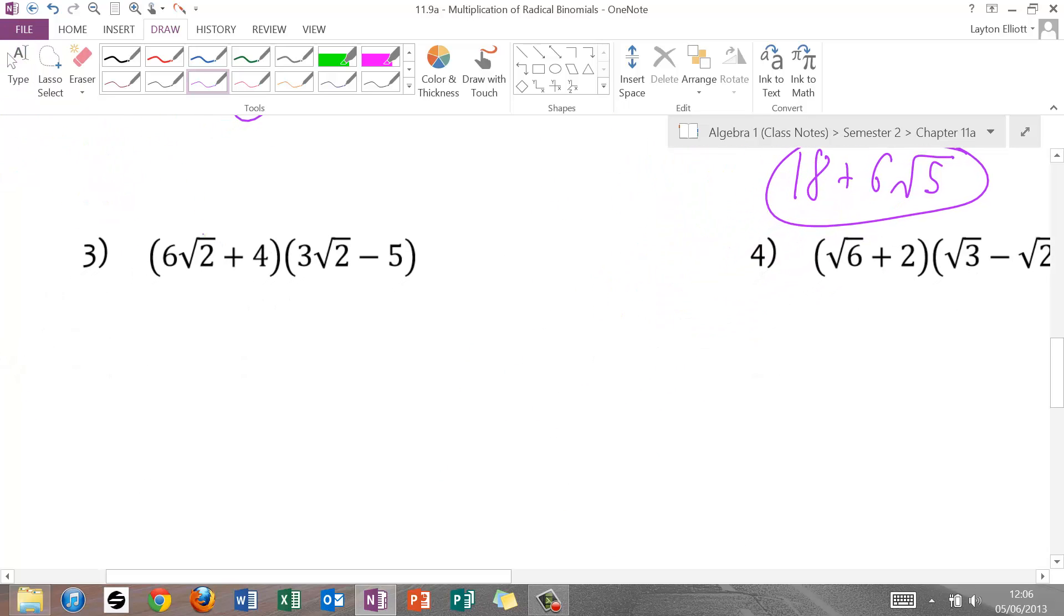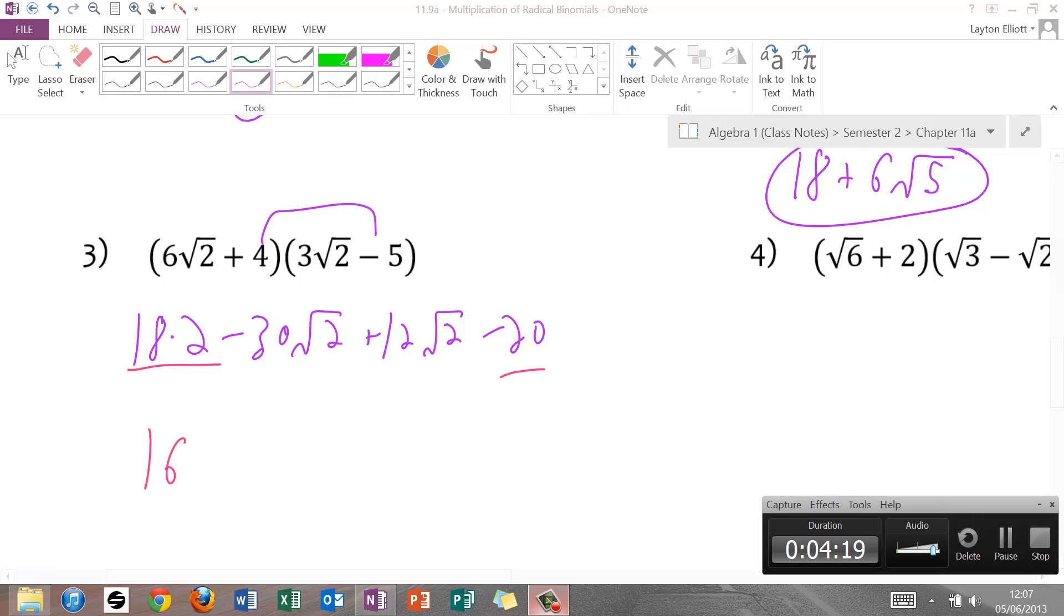Number 3. Let's do first outer, inner, and last here. First, 6 times 3 is 18. Radical 2 times radical 2 is 2. So my first term is 18 times 2. Outer is minus 30 root 2. Inner is plus 12 root 2. And then last is minus 20. Look for your like terms. We have 36 minus 20. 36 minus 20 is 16. Then we have negative 30 plus 12. Negative 30 plus 12 is negative 18. And that's negative 18 root 2.